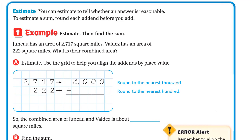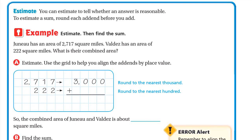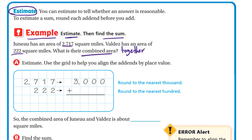Now we will add a step before adding called the estimate. You can estimate to tell whether an answer is reasonable. To estimate a sum, round each addend before you add. Combined means together, so combined or together means the total.